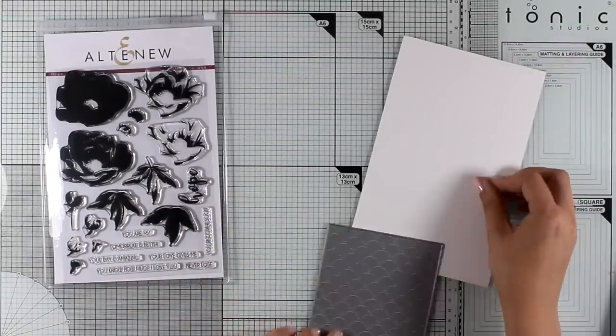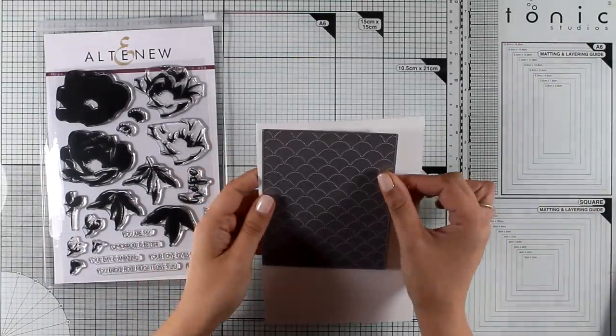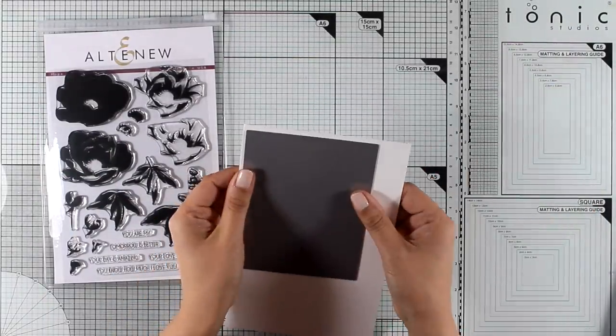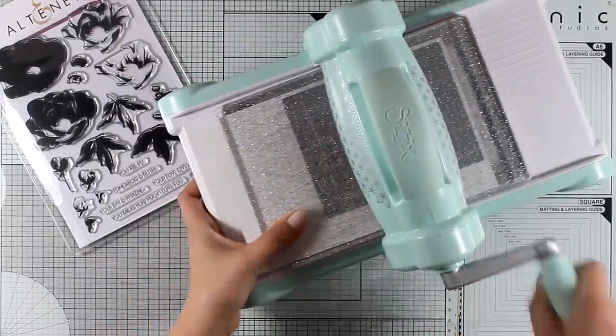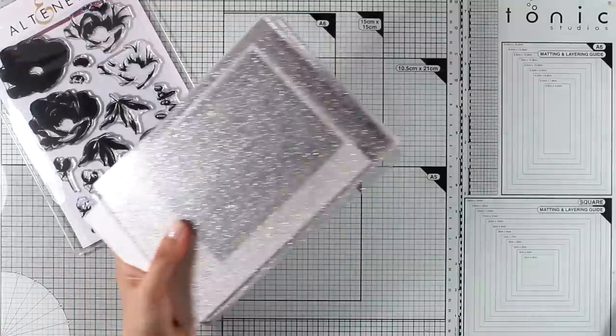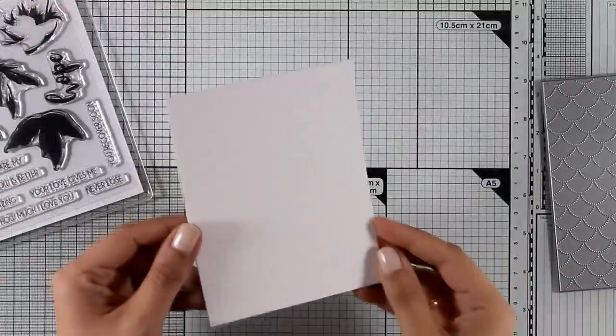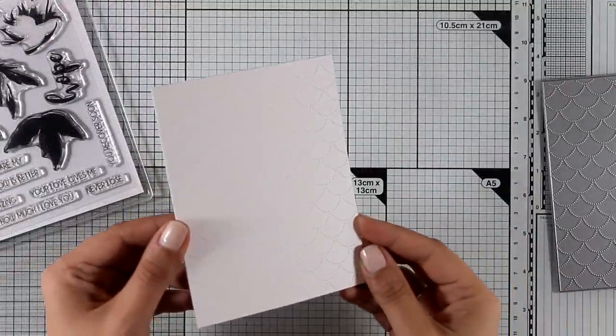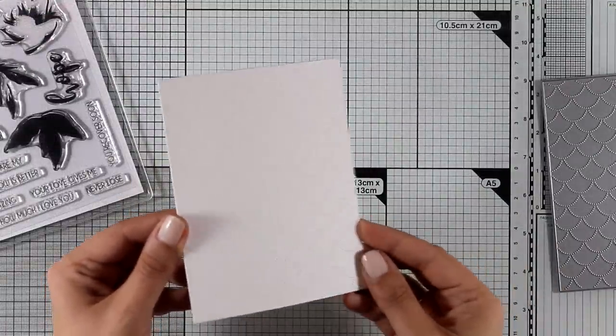To start I'm going to use this new die, this is called Dotted Scales Debossing Cover Die. It's going to cut out a panel that will cover up a standard card so that's four and a quarter by five and a half. And hopefully you can see the beautiful design with all those little dots that create scales.